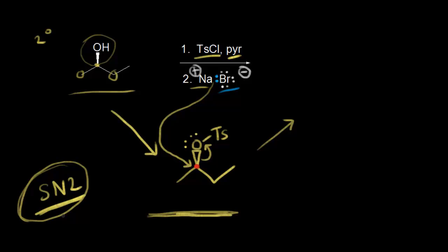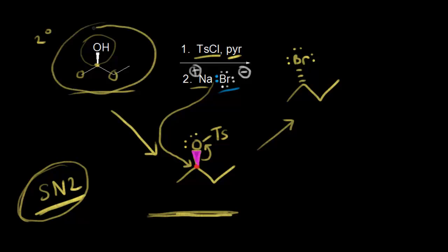This time we do have to worry about stereochemistry. We have a wedge — this part is coming out at us in space — so the bromide anion has to attack from the opposite side. When you draw the final product, the bromine is shown as a dash because it attacked from the opposite side, giving us inversion of configuration. Assigning absolute configuration: the starting alcohol is R, and after SN2, we form the S enantiomer. This is inversion of configuration because the nucleophile attacks from the opposite side.